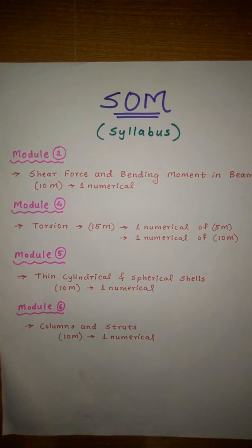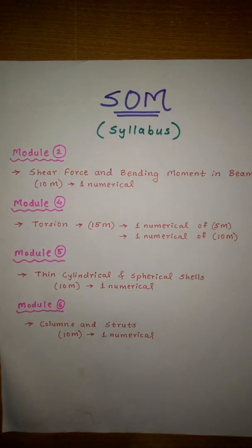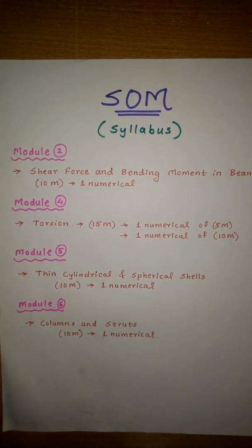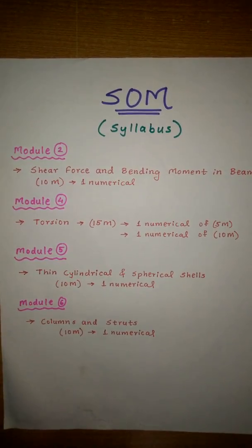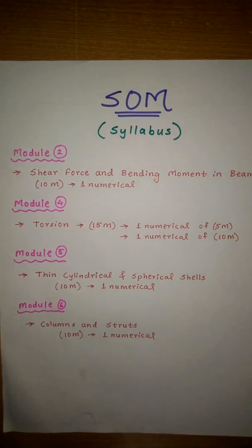And our next module is Module 5. Module 5 contains thick cylindrical and spherical shells which has formulas in it, and you can easily get 10 marks by just putting the terms in the formula.